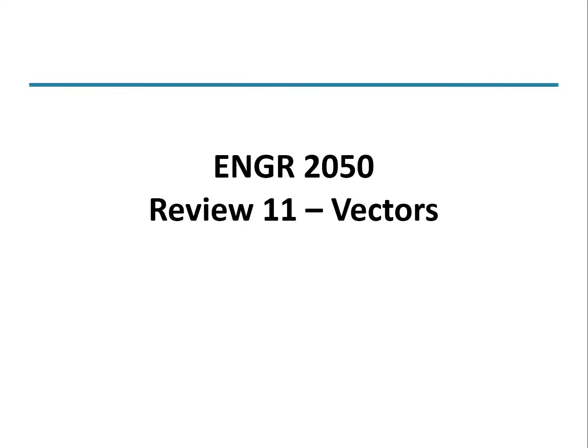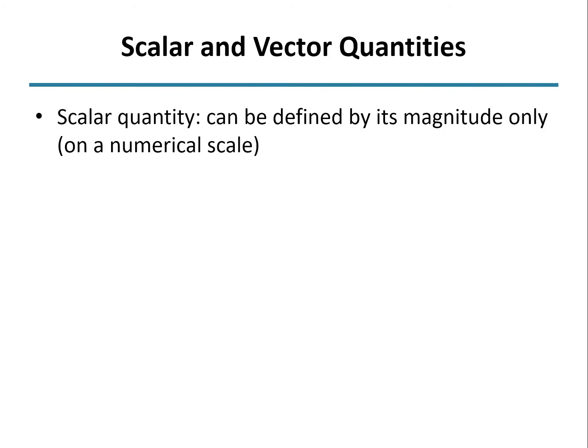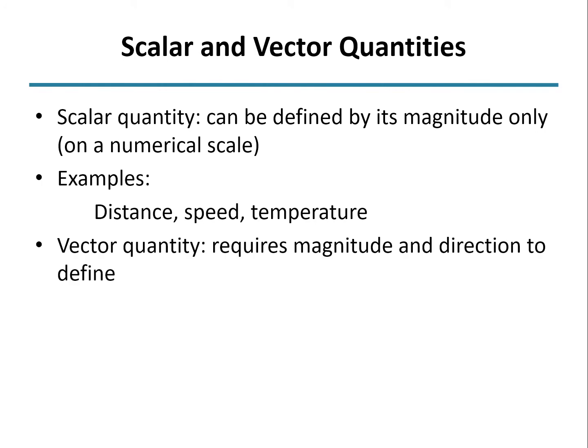The last topic we covered was vectors, in particular vector addition. Vector quantities differ from scalar quantities. A scalar is defined by its magnitude only - examples include distance, speed, and temperature - whereas a vector quantity needs to have magnitude and direction to be completely defined. Position, velocity, acceleration, and force are examples of vector quantities.